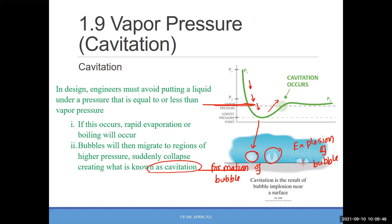Cavitation is very important. Think about it: a bubble collapsing will create some impact on the surface. With millions of bubbles, the impact will be huge. That's why we're concerned — we don't want cavitation to occur, though we can't always prevent it. I'll show you the after-effect of cavitation in the survey image on the next slide.